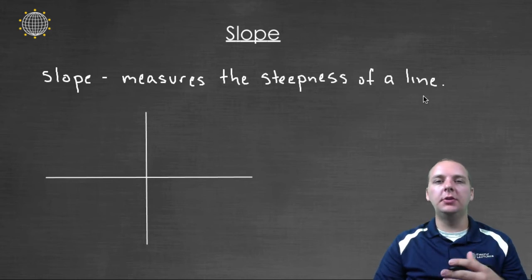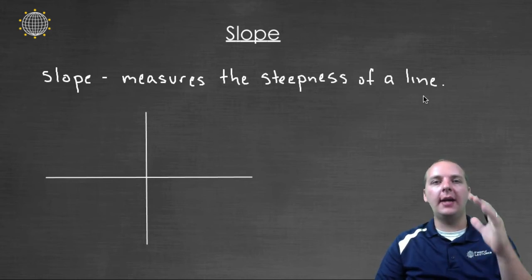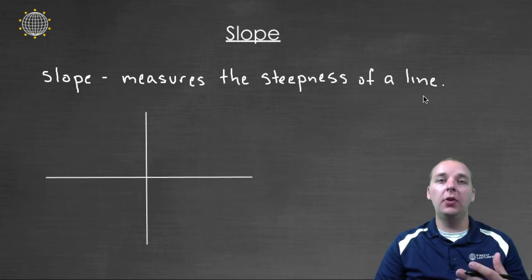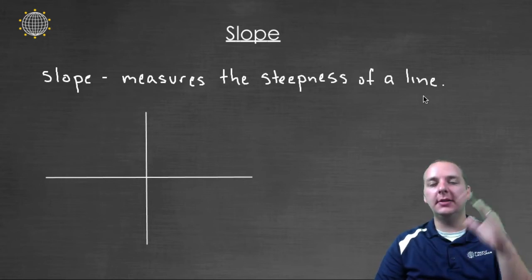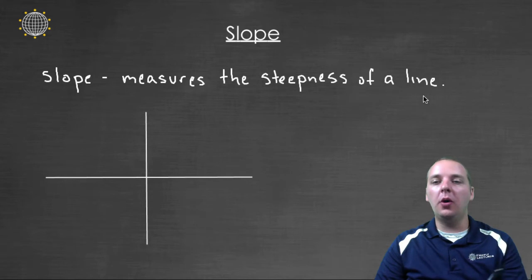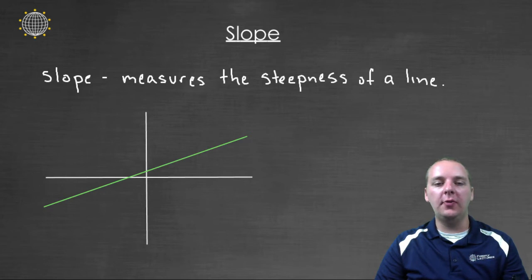The slope of a line measures how quickly a line rises or falls, in other words it measures the steepness of the line. What we want is given a line, let's say like this one, we'd like to be able to find a numerical value to attach to this line, usually we use the letter M.